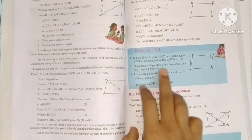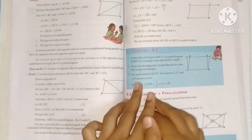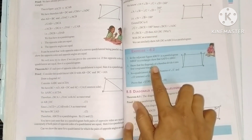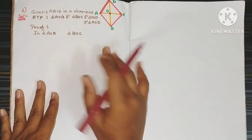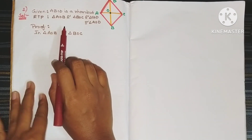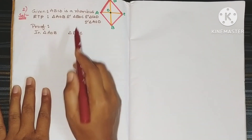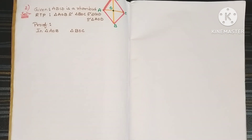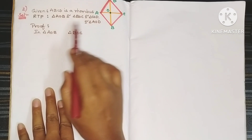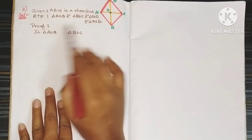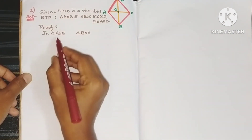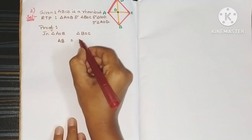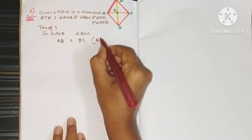Second problem: show that the diagonals of a rhombus divide it into four congruent triangles. This same problem appears in 10th class also. Draw a rhombus. Required to prove (RTP): all four triangles AOB, BOC, COD, and AOD are congruent. We compare triangle AOB and triangle BOC. Since all sides of a rhombus are equal, AB equals BC — sides of a rhombus.